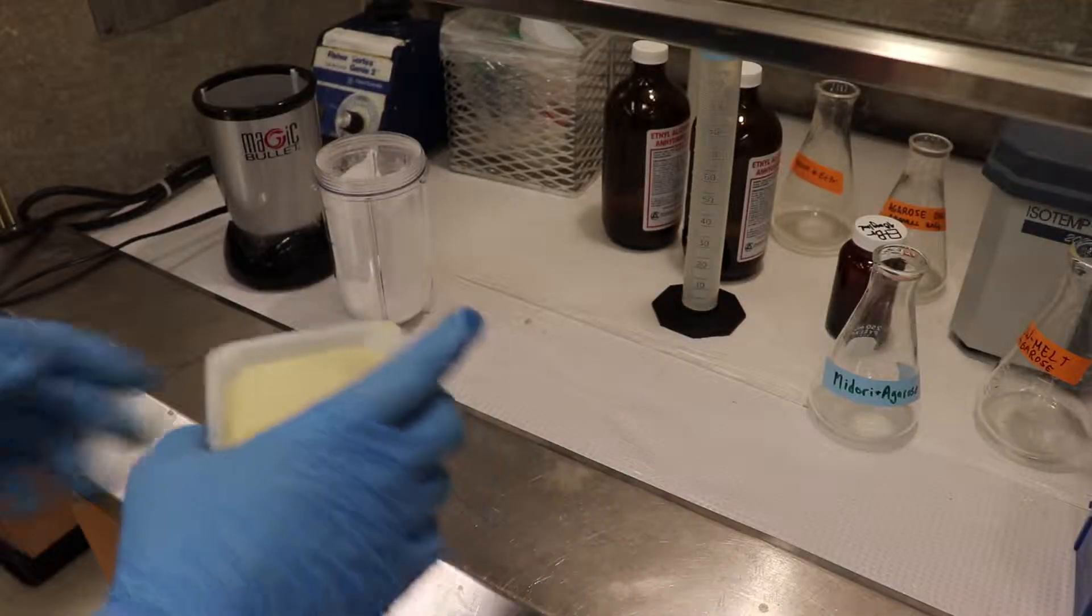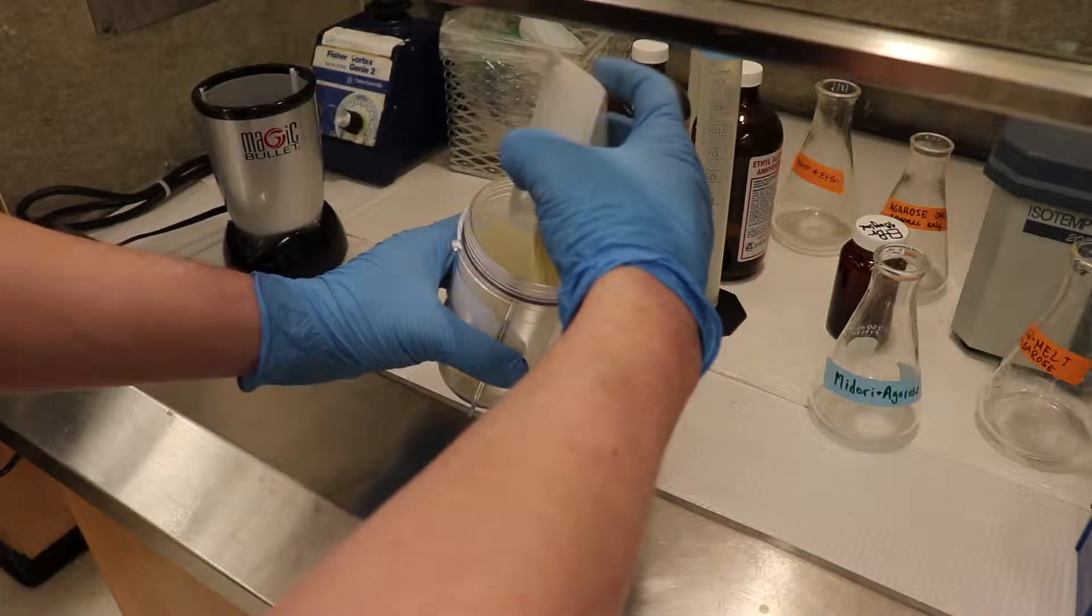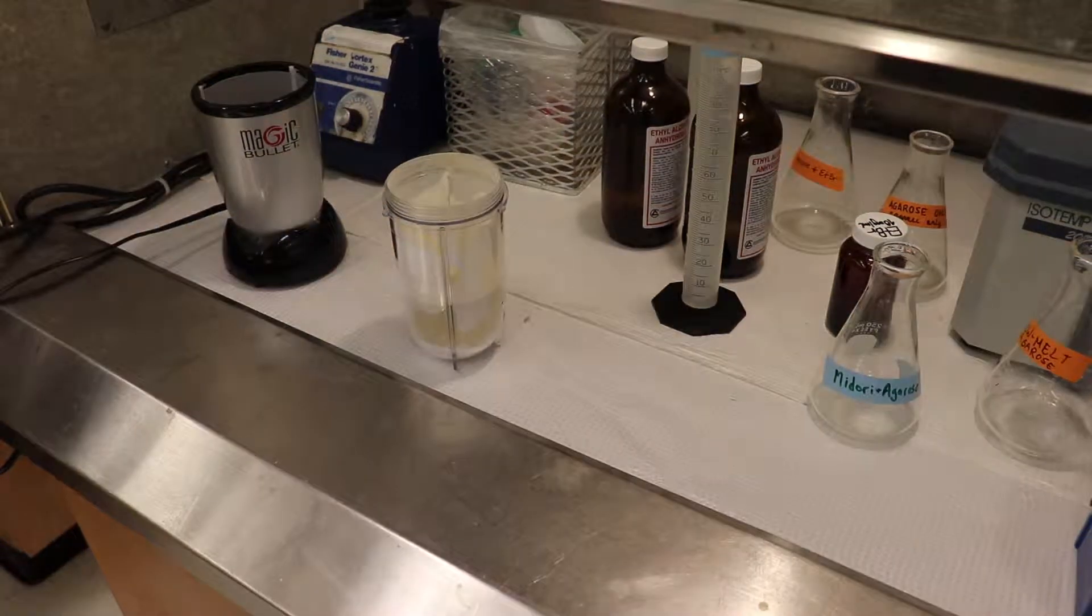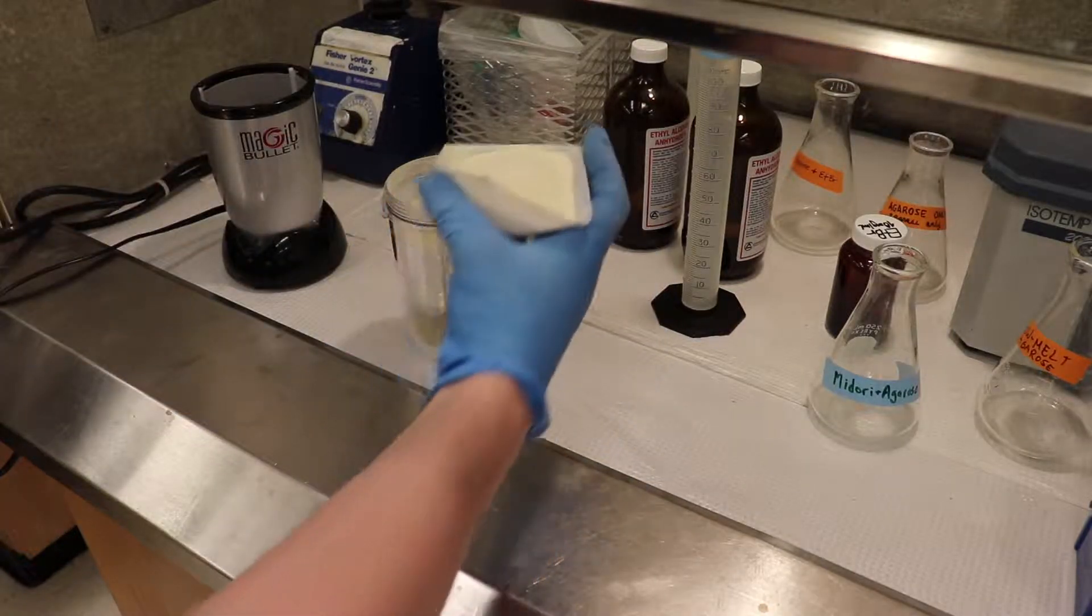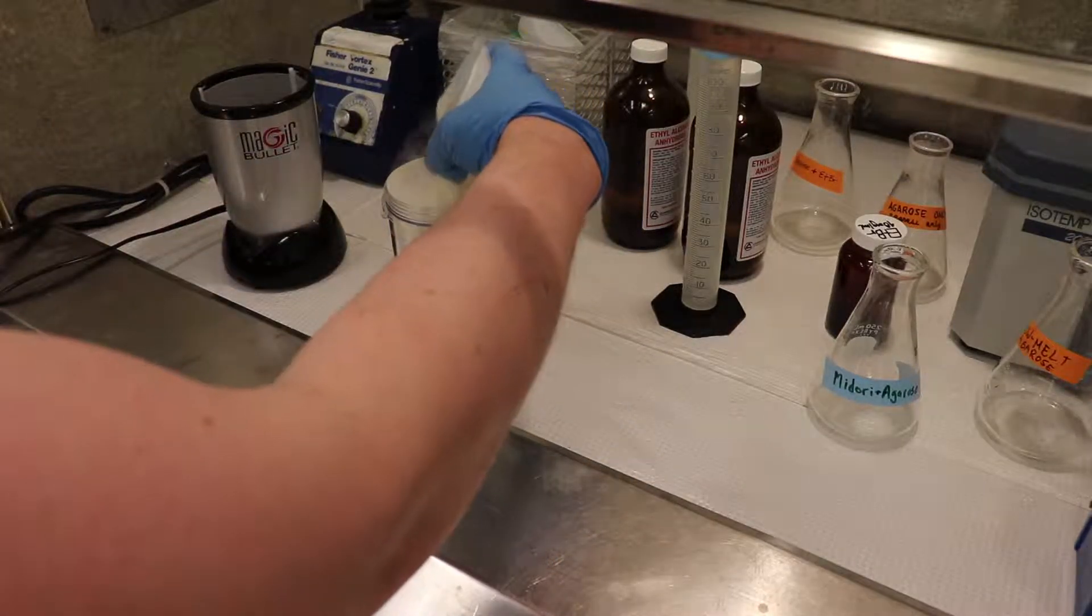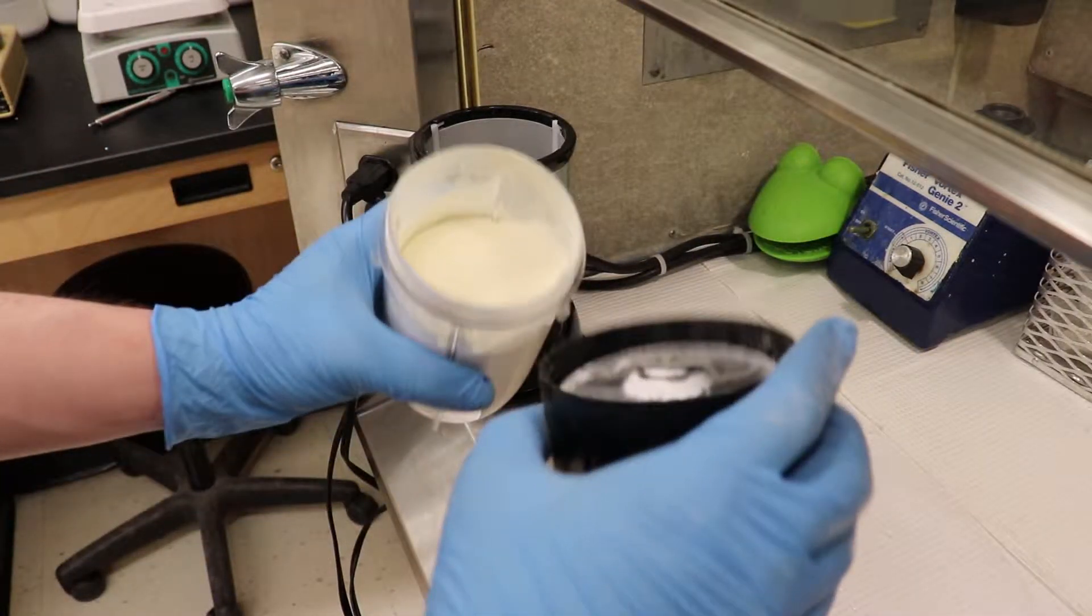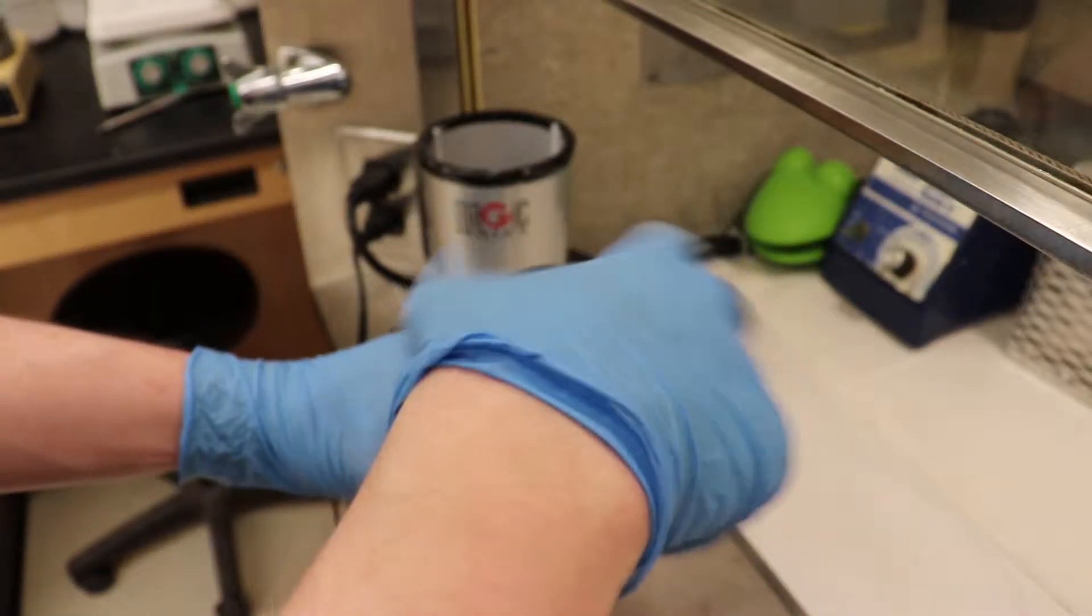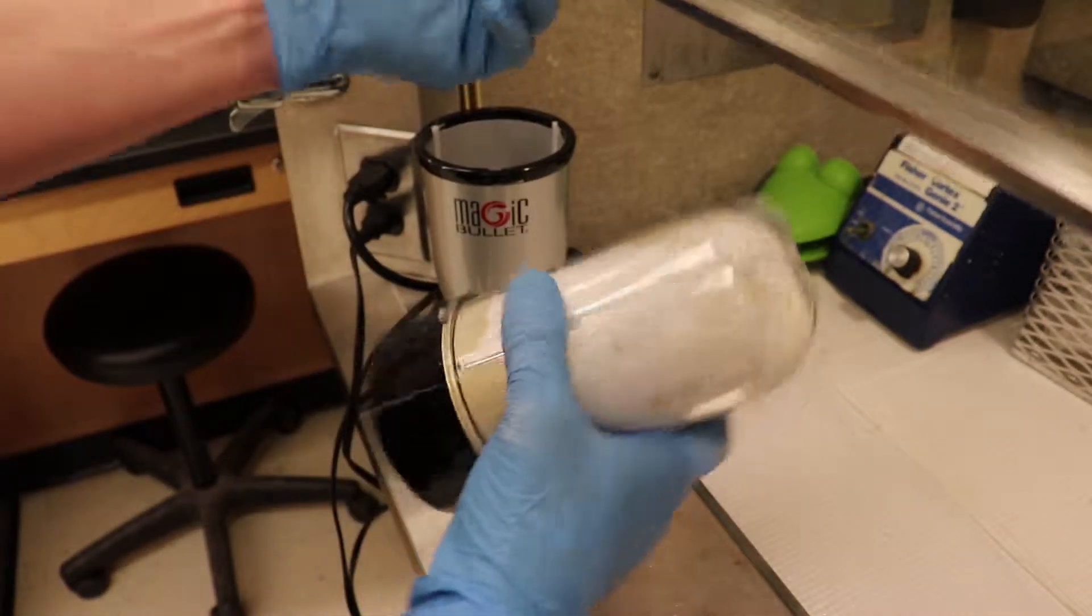So in goes the yeast extract. And in goes the tryptone. Cheers! When you've added all your ingredients, then you just cap it up. And blend it until it's homogeneous. So we'll use the blender to do that.